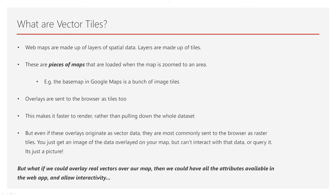You just get an image of the data overlaid on your map, but that doesn't allow any interactivity or any attributes, anything like that. So what if we could overlay real vectors over our map? Then we'd have all the attributes available and we could allow some interactivity. So there are ways to do this — I'm just going to talk about a really simple, quick and easy way.